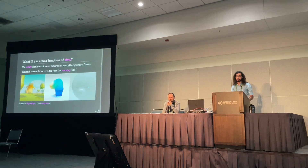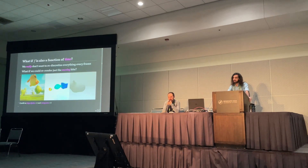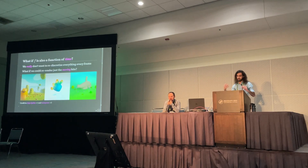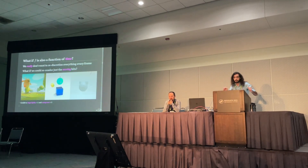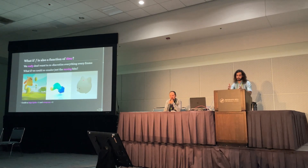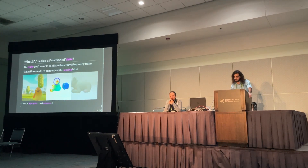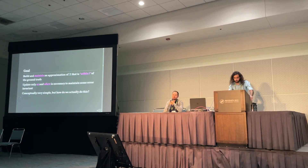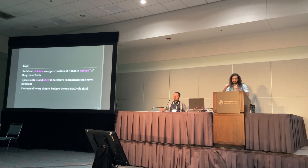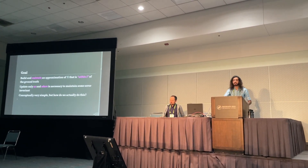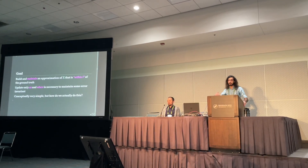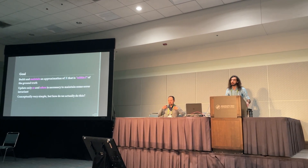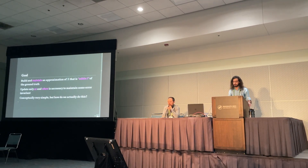But, what if it's not? What if f is actually a function of time? In this case, you really don't want to be re-discretizing your whole scene in every frame. So naturally you might be asking, what if we could just re-render the moving bits? If you stare at some of these animations, you might notice that the moving bits are sometimes quite sparse. So, that's indeed our goal: we wish to build and maintain some sort of approximation of x that is within delta of the ground truth, and we want to update this thing only as and where necessary to maintain some sort of error invariant.